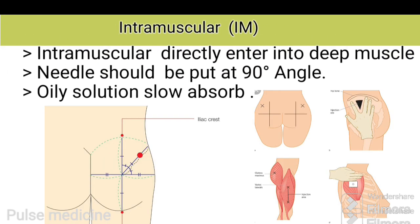Intramuscular: a doctor can use intramuscular injection to deliver medication into a person's muscle tissue. The muscles have a rich blood supply which helps the body absorb the medication quickly. It is commonly used in administering drugs to a patient who cannot take medication through other commonly used routes. The needle is inserted directly into deep muscles at a 90-degree angle.